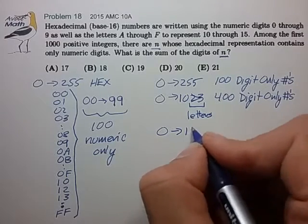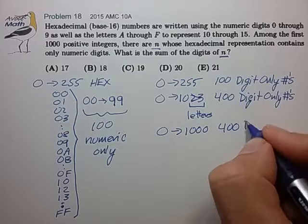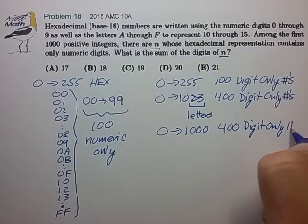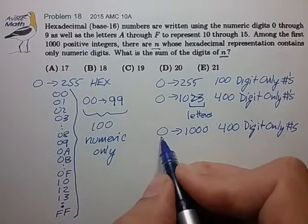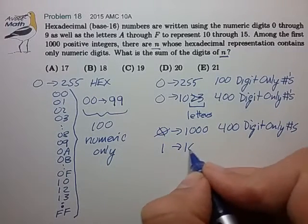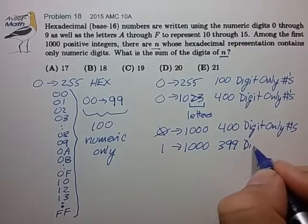And if we go from 0 to 1,000, that too would contain 400 digit only numbers. And we really don't want to count 0 either, so if we go from 1 to 1,000, that would be 399 digit only numbers.